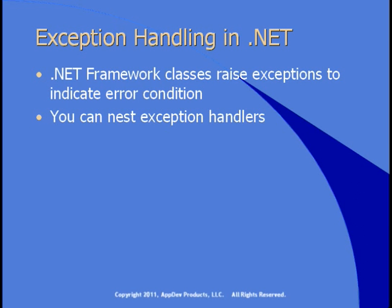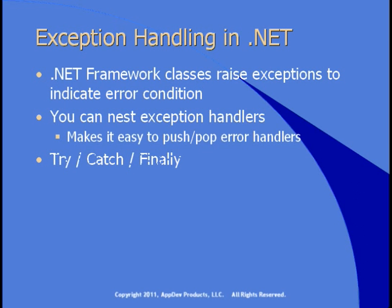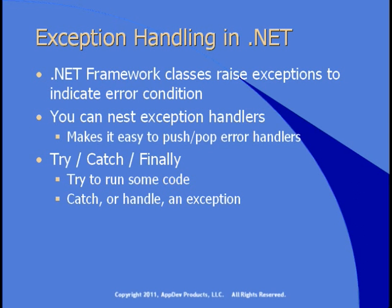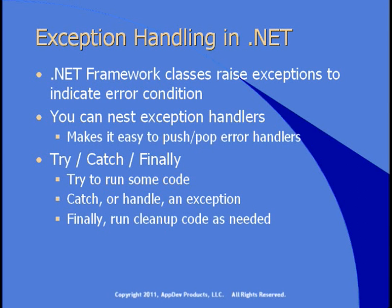You can nest exception handlers, so you can have a higher-level exception handler and then within that more specific handlers. This makes it easy to handle errors in a higher-level method or in the methods that that method calls. The basic building blocks of exception handling in .NET are the try, the catch, and the finally block. You'll put some code in a try block and try to run it. If it succeeds, great. If it causes an exception, you'll catch or handle it — typically displaying instructions to the user and keeping the program from ending. In the finally block you can run cleanup code, for example to shut down a database connection or release any resources you're using.